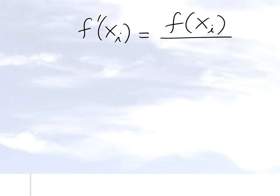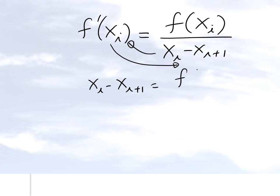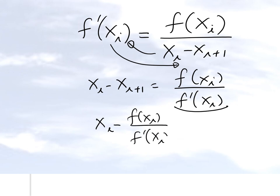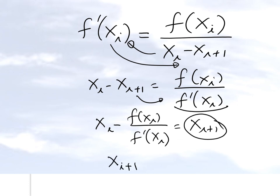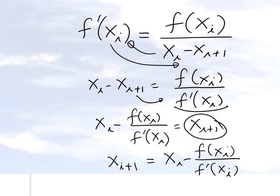The formula is: f'(x_i) = f(x_i) / (x_i − x_{i+1}). Rearranging, x_i − x_{i+1} = f(x_i) / f'(x_i). Moving the unknown x_{i+1} to the left side and the known terms to the right side, we get: x_{i+1} = x_i − f(x_i) / f'(x_i). That is the Newton-Raphson method formula.